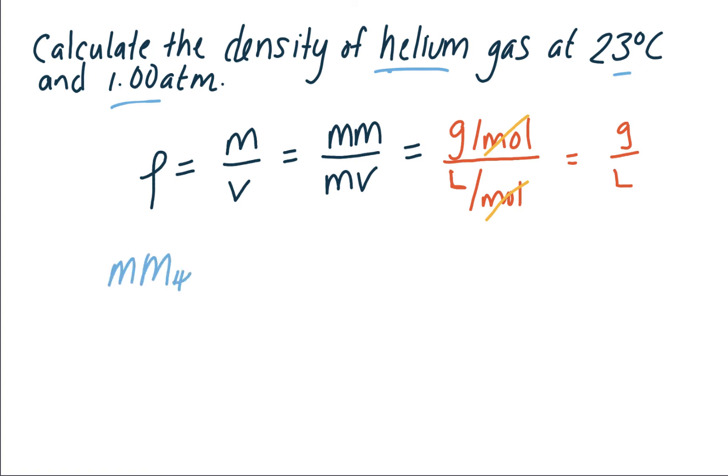If we look at this particular example, the molar mass of helium, we just find from the periodic table. For the molar volume, we said we're going to have units of liters per mole, so that's a unit of volume per a unit of moles.